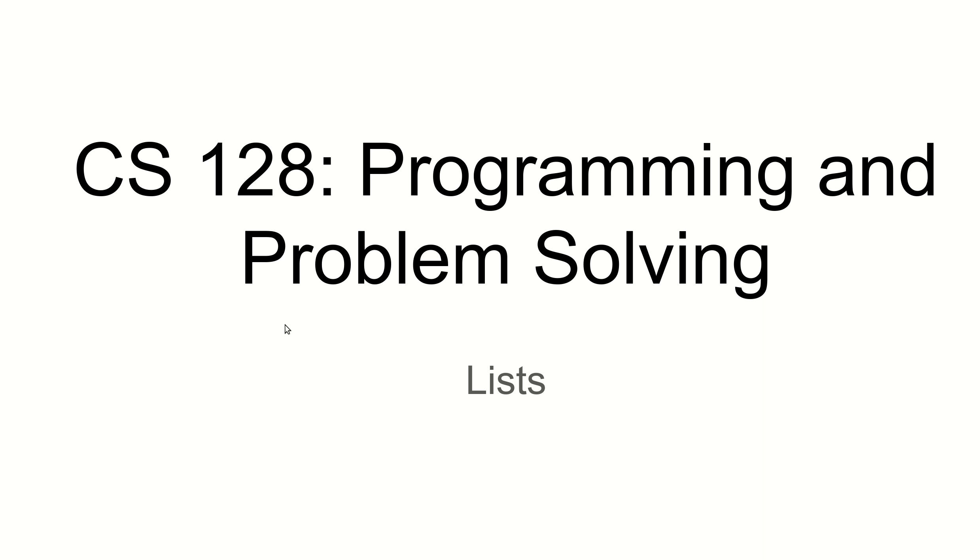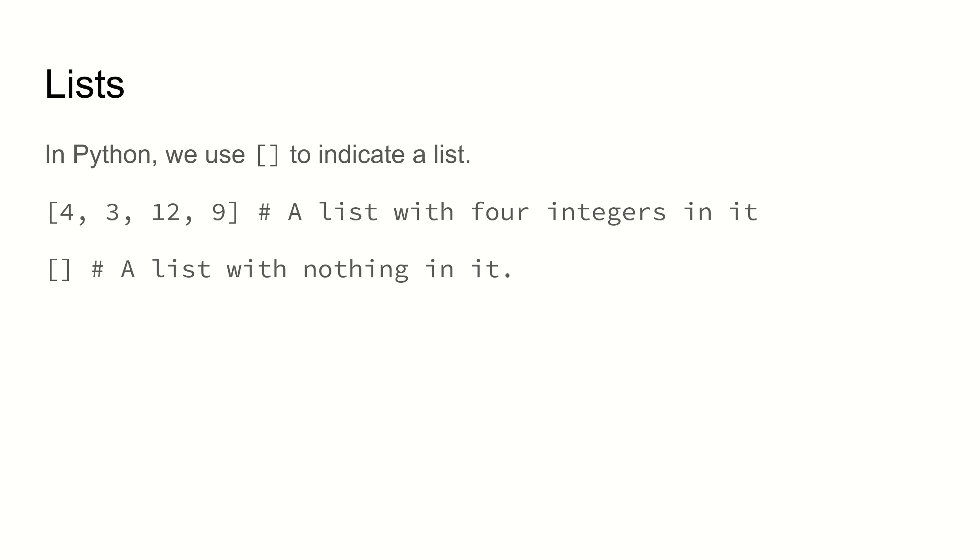We've seen some examples before where we used lists in Python, but I'd like to take a little bit of time and give some more detail about lists. Syntactically, we can use square brackets, as shown here, to indicate that something is a list.